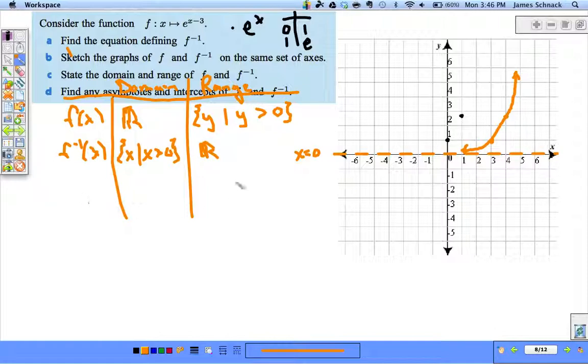Asymptote, let's talk about that. Asymptote for f of x is y equals zero. We're just going to have to throw down a vertical asymptote going the same way. Boom, there's my asymptote for the inverse.